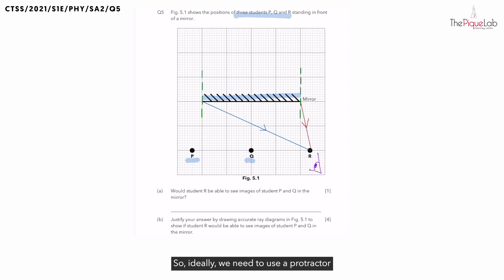But for questions where we don't need to do an accurate ray diagram, we can just ensure that the angles are as close to equal as possible. Now let's try one. If I were to draw the incident ray like this, does the angle of incidence and reflection look equal to you? No, it doesn't. So this is not the best incident ray.